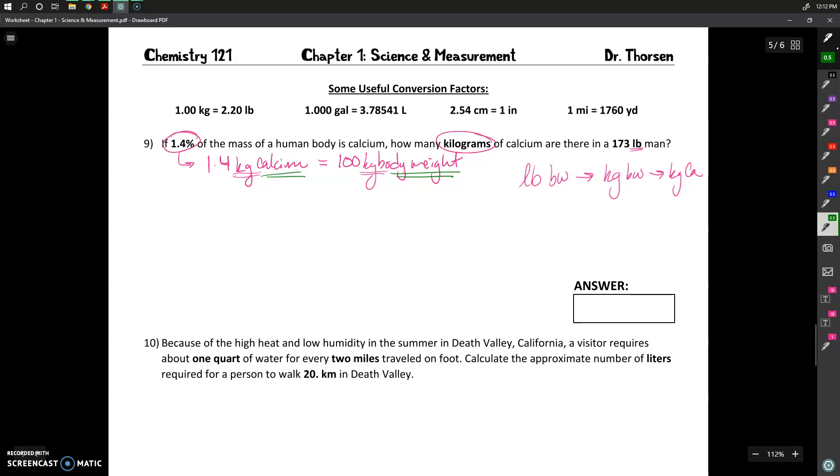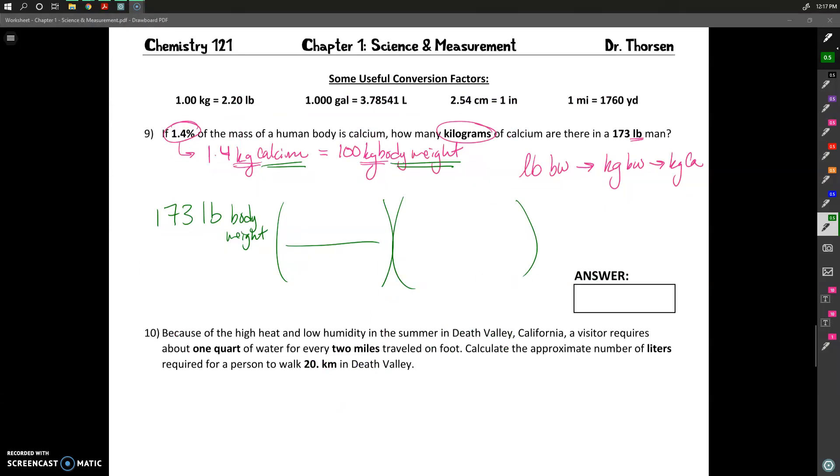So if I set this up, I'm going to start with the 173 pound man, so pounds of body weight. And I recognize that that is in my numerator, and I'm going to convert first into pounds of body weight. So I want to put my pounds of body weight on the bottom and have my kilograms of body weight on the top.